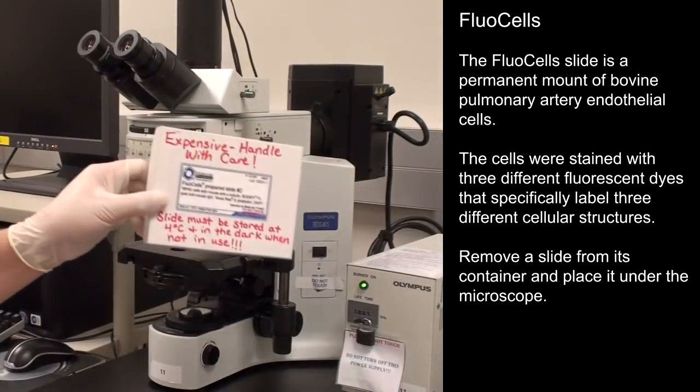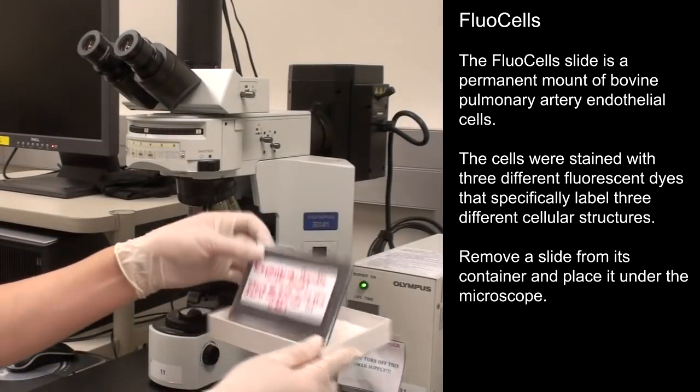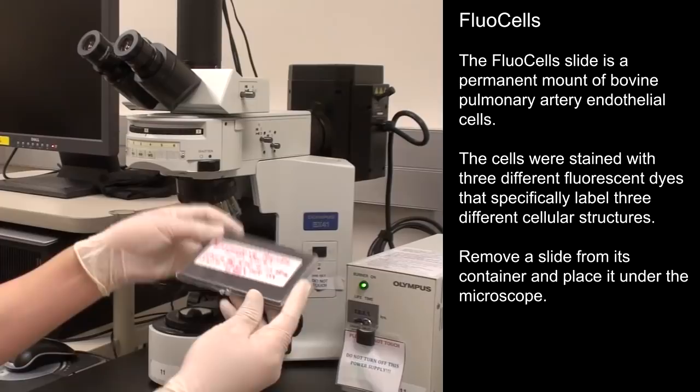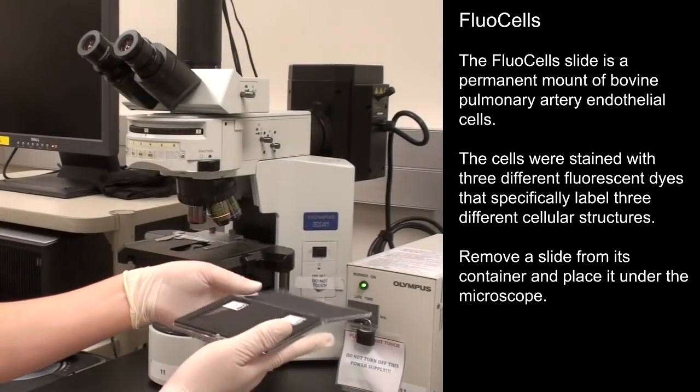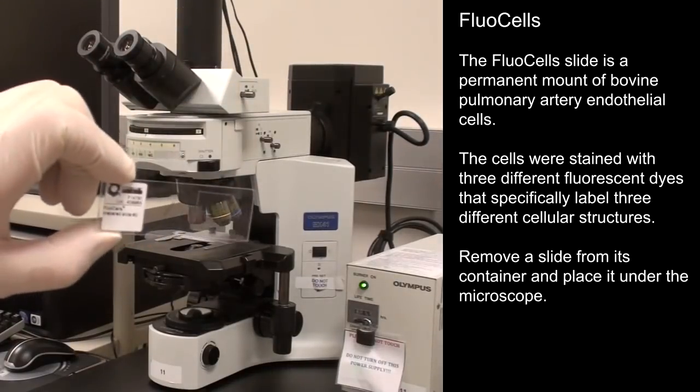The fluocell slide is a permanent mount of bovine pulmonary artery endothelial cells actually grown on the coverslip. The cells were stained with 3 different fluorescent dyes that specifically label 3 different cellular structures. Remove a slide from its container and place it under the microscope.